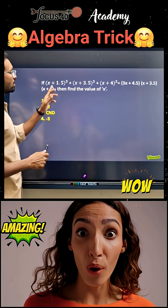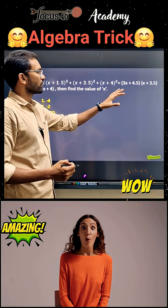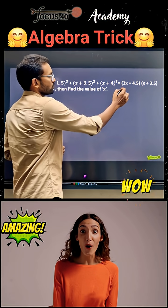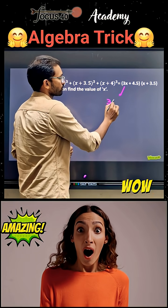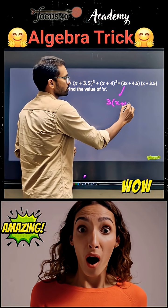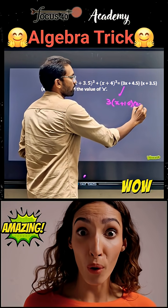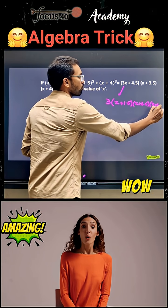Here we have a cube plus b cube plus c cube equals 3abc. We can take three as common. Three common from the expression x plus 1.5, times x plus 3.5, times x plus 4.